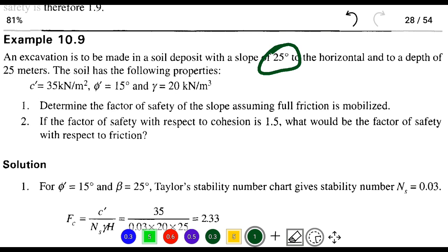The soil has the following properties: c' (cohesion) equal to 35 kilonewtons per meter squared, φ' (angle of internal friction) is 15 degrees, and γ (unit weight of soil) is 20 kilonewtons per meter cubed.